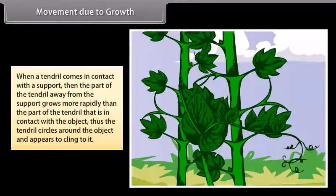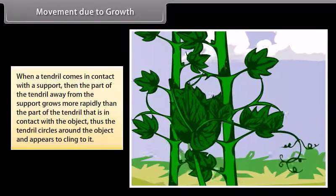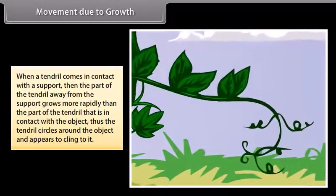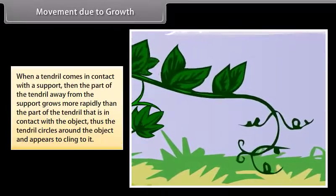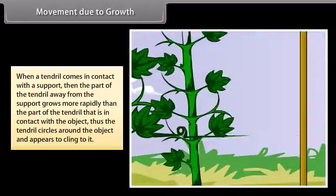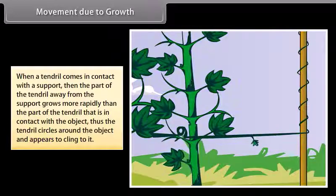When a tendril comes in contact with a support, the part of the tendril away from the support grows more rapidly than the part that is in contact with the object. Thus, the tendril circles around the object and appears to cling to it.